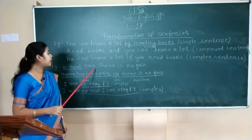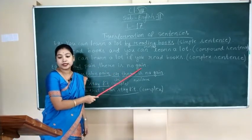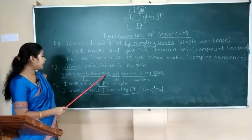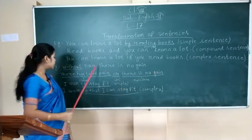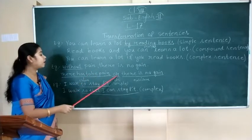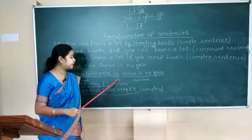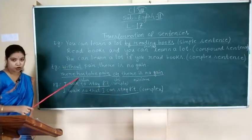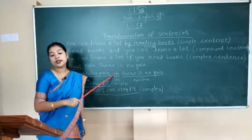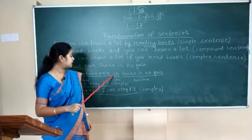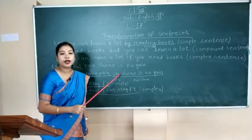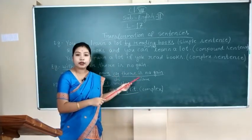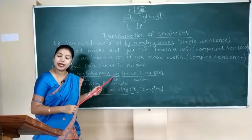Here is an example: 'Without pain, there is no gain.' This is a simple sentence. When we transform it into a compound sentence, it becomes: 'There has to be pain, or there is no gain.' Here, 'there has to be pain' is a clause, 'or' is the coordinating conjunction, and it is connected to the main clause 'there is no gain.' We expand the phrase into a clause and connect it to the main clause using a coordinating or correlative conjunction.